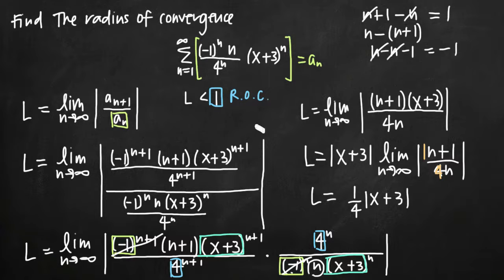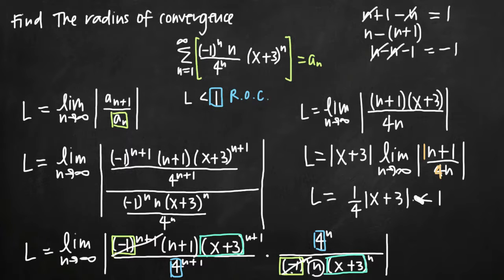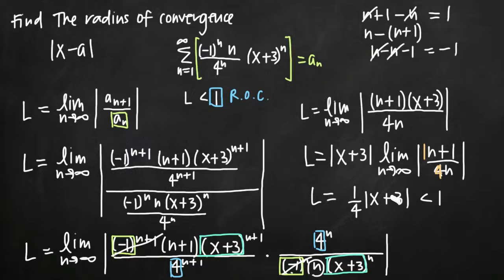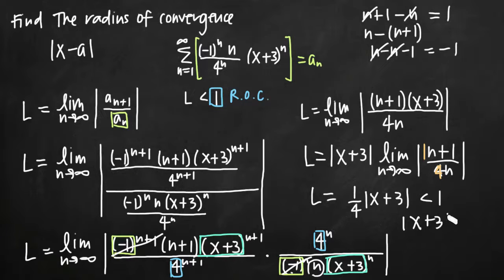Now remember, once we have a value for L, we set it less than 1 to find our radius of convergence. We need to make sure we only leave a particular value on the left-hand side of the inequality — specifically some absolute value of x minus a. We've got x plus 3, which is x minus negative 3, where a equals negative 3. But we also have this one-fourth value that we need to eliminate. So we multiply both sides of the inequality by 4, leaving us with the absolute value of x plus 3 less than 4.